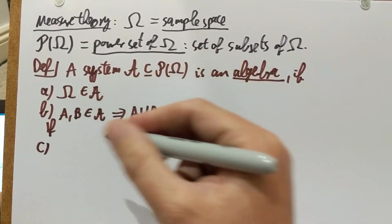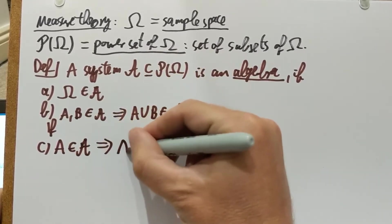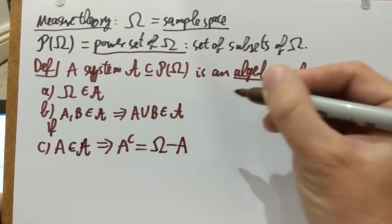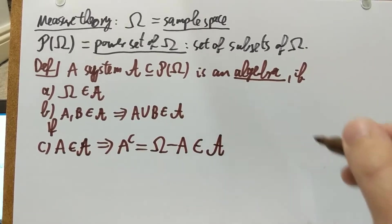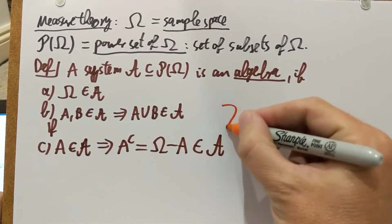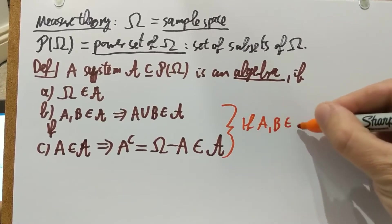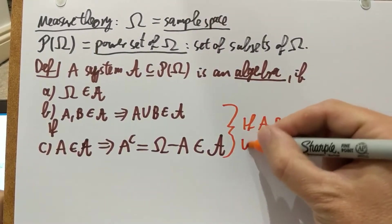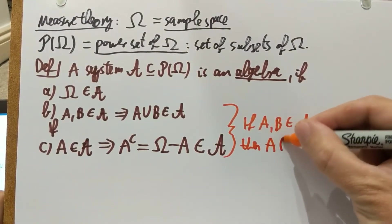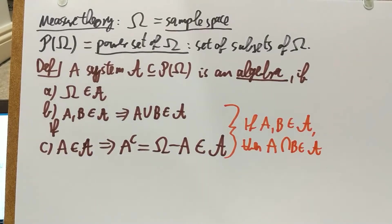And third, if you have a subset A of omega in this family script A, then it follows that its complement — which is just omega minus A — is also in script A. That's the definition of an algebra. One remark: from these two properties, you can easily establish that if A and B are again members of this family, then the intersection is also a member. So to get from unions to intersections, you can use complements — not only unions will be members of the family, but also intersections. That's a corollary of properties B and C.